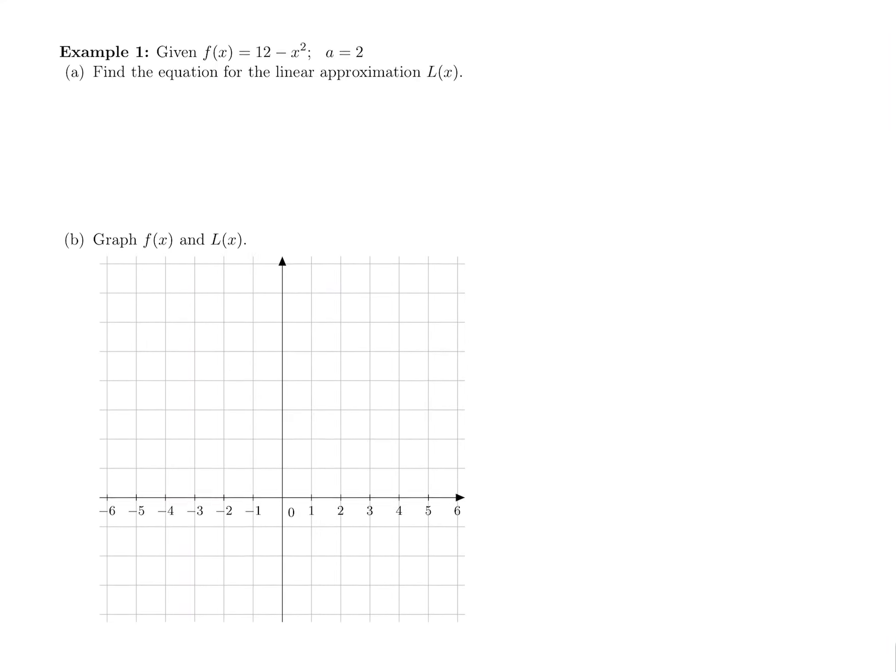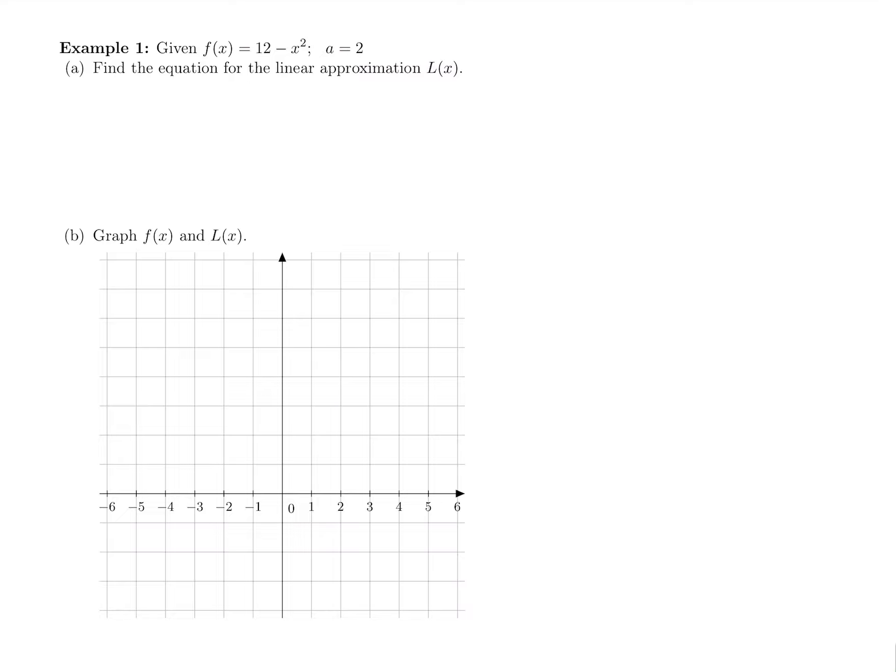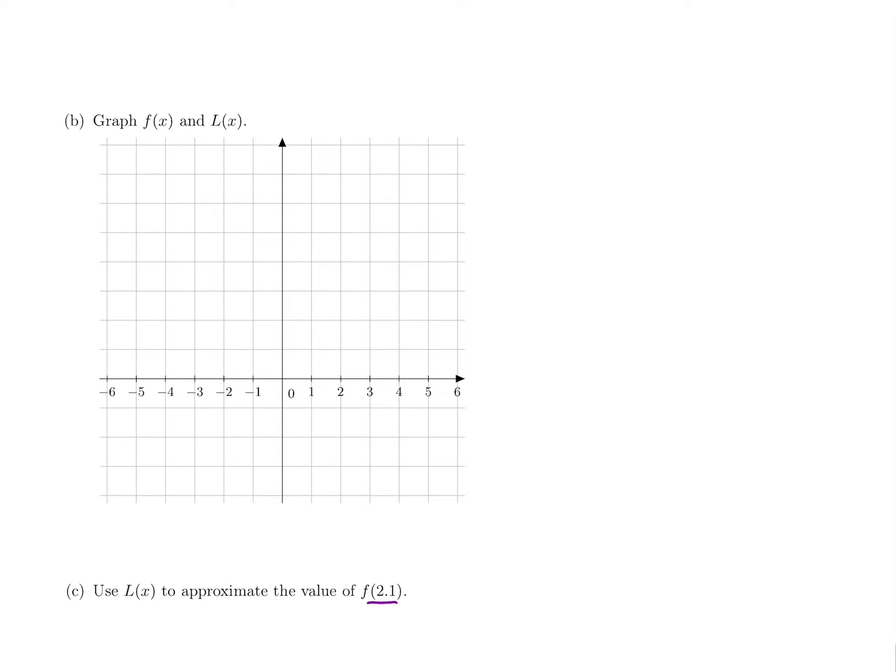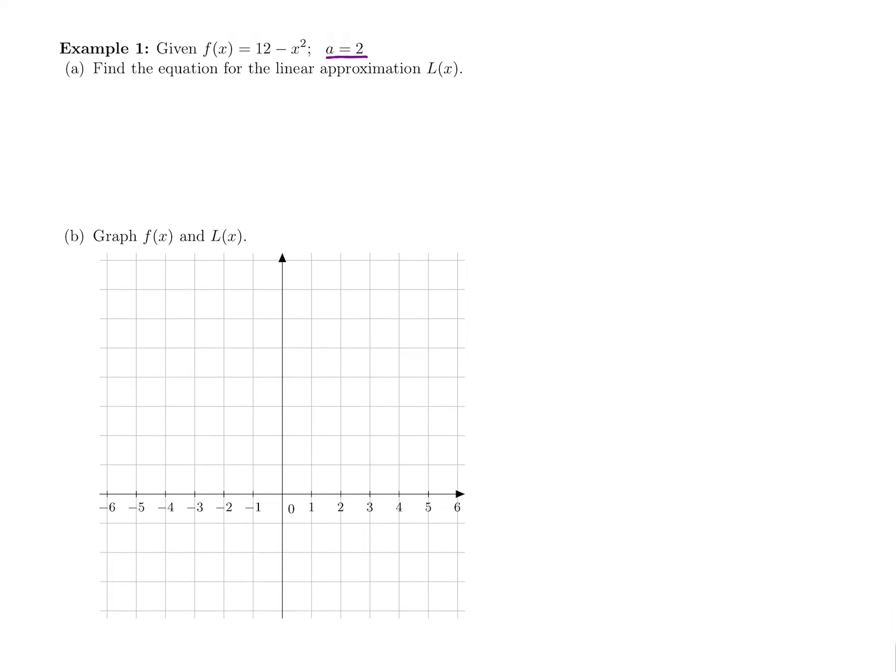So looking at the function 12 minus x squared, a value I can easily plug in without a calculator is 2. One that I might not be able to plug in without a calculator is 2.1. So we're going to plug in 2, make a linear approximation for it, and use it to evaluate 2.1.